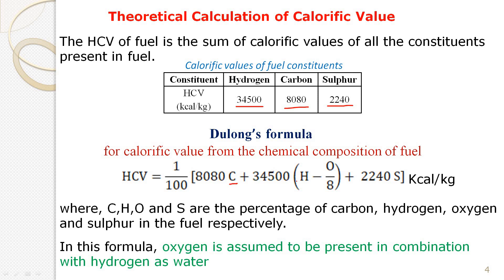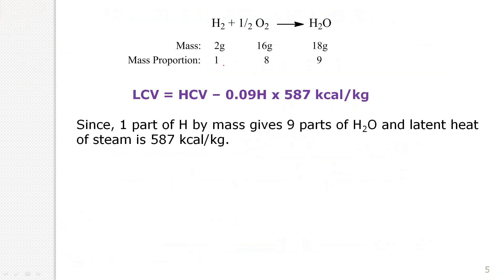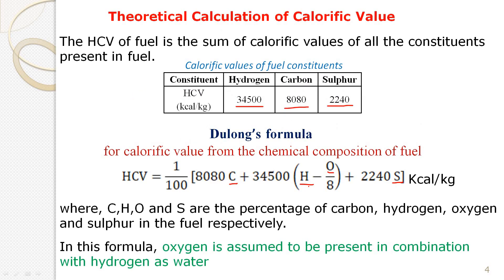Here, C, H, O, and S indicate the percentages of carbon, hydrogen, oxygen, and sulfur present in the fuel. We subtract the hydrogen percentage as (H − O/8) because one part of hydrogen combines with 8 parts of oxygen. If oxygen is present in the fuel, it is combined with hydrogen in the form of water, so that hydrogen is not available for combustion and we must subtract that value.